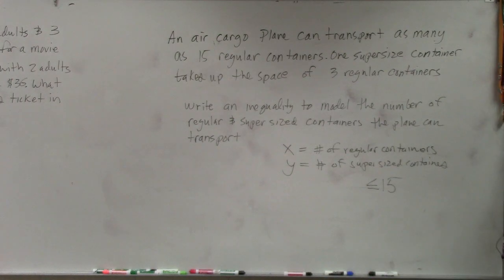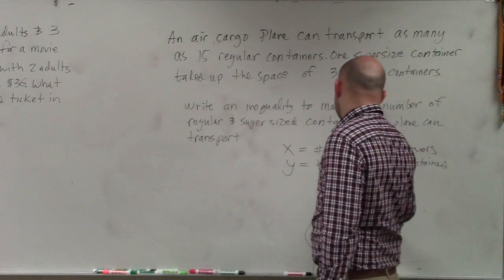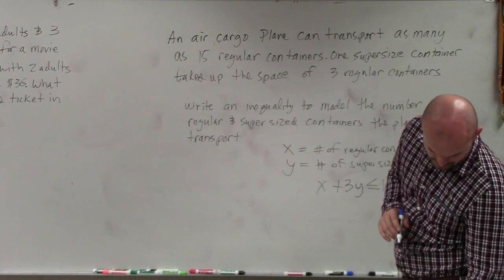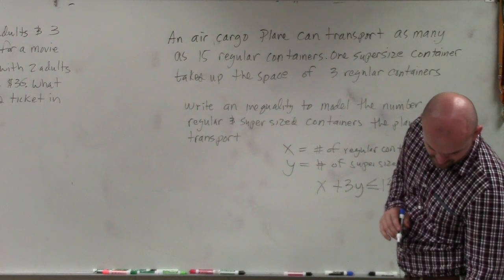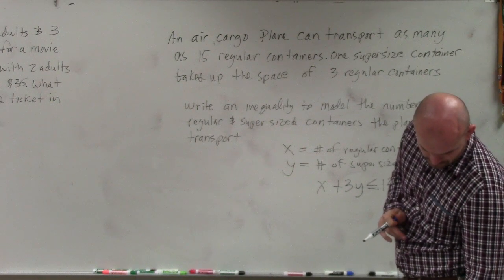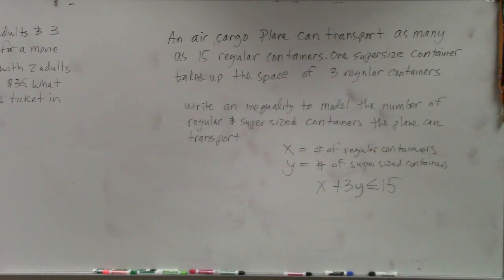The air cargo plane can transport as many as 15 regular containers, and one supersized container takes up the space of three regular containers. So I can represent this as x for my regular containers and 3y, where y represents the supersized containers — which are three times the size. So the inequality would be x plus 3y is less than or equal to 15.